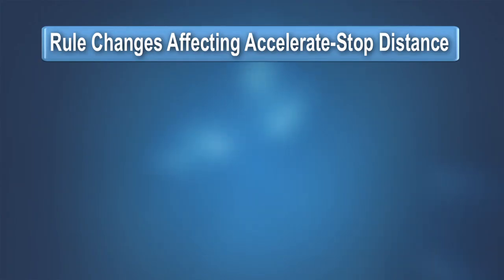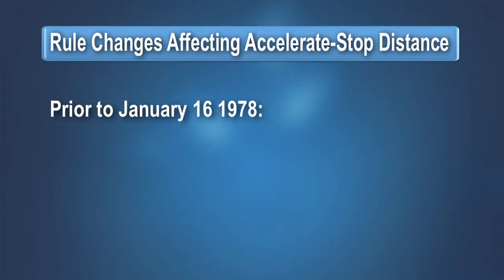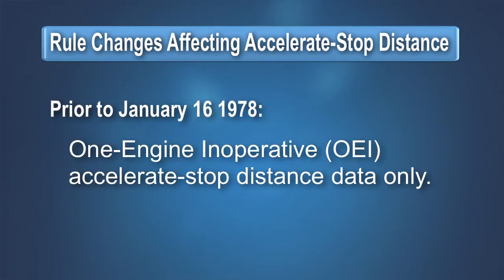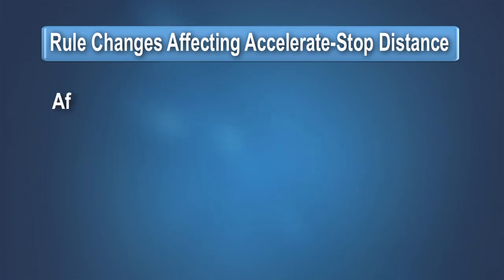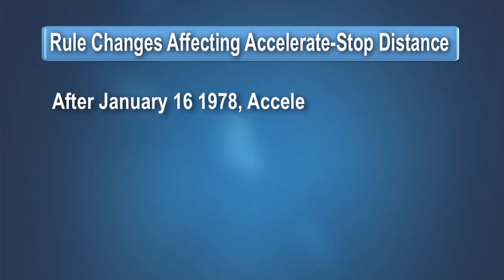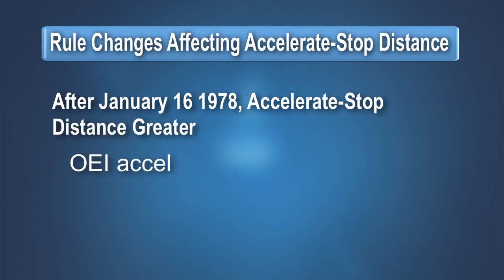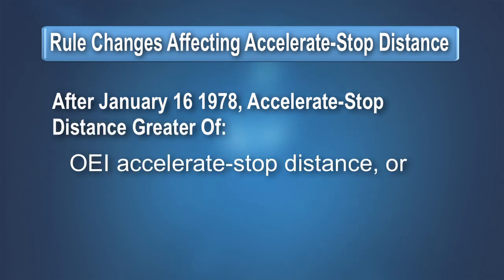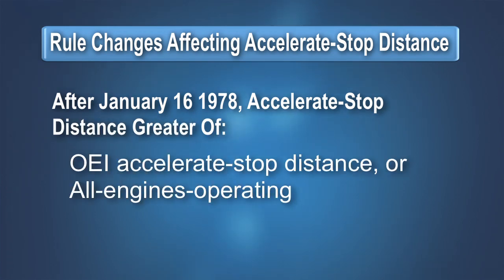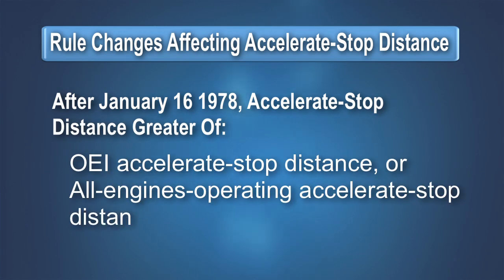Originally, the accelerate stop distance did not include consideration for events other than engine failure that could lead to a rejected takeoff. In 1978, the certification rules were amended to consider both engine failure and non-engine failure scenarios.